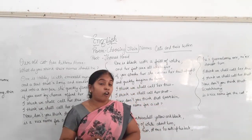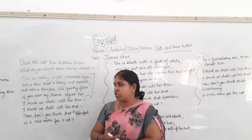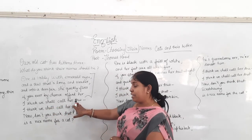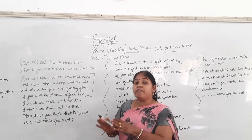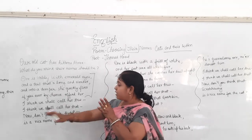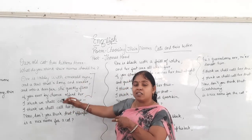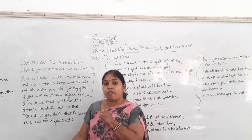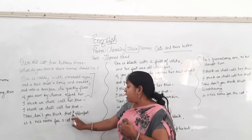Now the poet is thinking of a suitable name for the kitten as per these characteristics. He is very confused about what the suitable name should be — that's why the poet has repeated the lines 'I think we shall call her this, I think we shall call her that' twice in each stanza. After the discussion of these qualities and traits of the kitten, he decided that Pepperpot should be the suitable name for the first kitten.